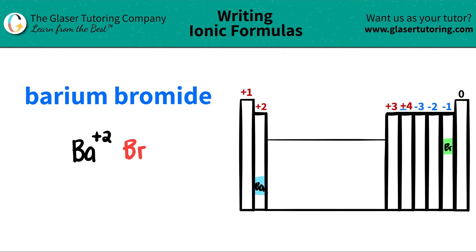Now all we have to do is we just have to take the charges and crisscross them down to tell me how much of each element I need. It's kind of like a little trick. So this plus two crisscrosses down telling me that I need two bromines. And then this negative one crisscrosses down telling me that I need one barium.